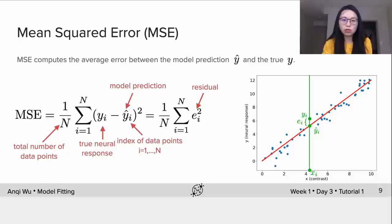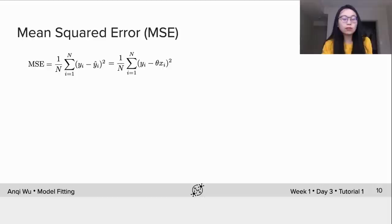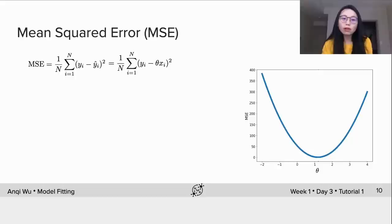Okay, now bringing ŷ equals theta multiplying x into the MSE expression, we arrive at this form of MSE as a function of theta. We can plot this function and we can see that the landscape is quadratic with only one global minimum.